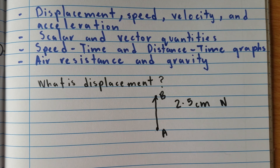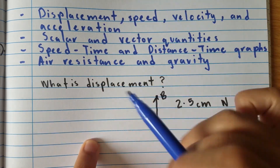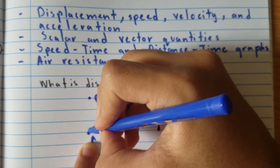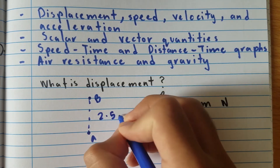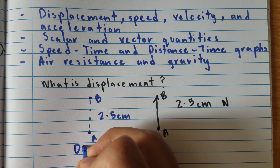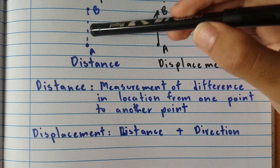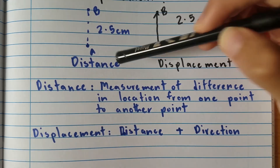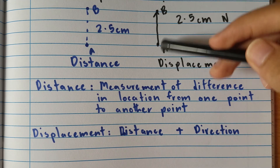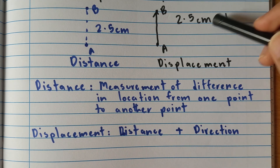Distance is simply the description of how much we move an object — we don't specify the direction. So say I have this blue marker at point A, and I move it 2.5 centimeters up to point B. We can just say the distance the marker traveled is 2.5 centimeters, with no direction stated. The difference between distance and displacement is that displacement is distance plus direction. So we move from A to B — that's the distance — and we also specify the direction, which is north. So this is displacement.